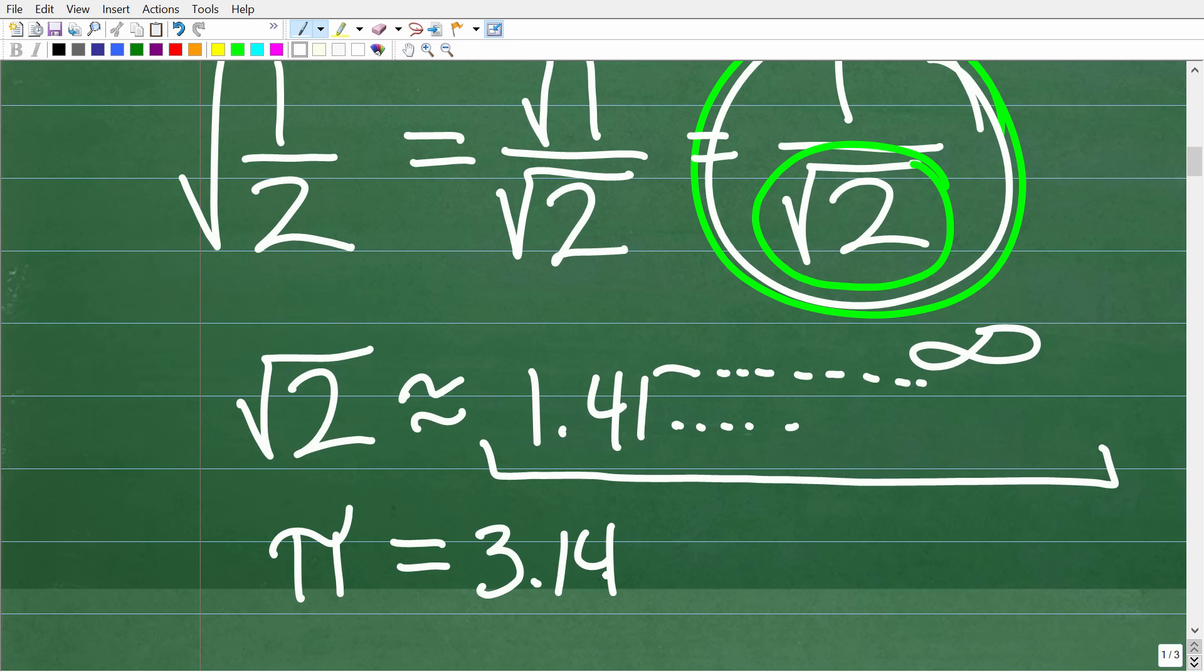You might be familiar with this concept with the value of pi. You may think that pi is equal to 3.14. Well, this is not true. The value of pi is approximately equal to 3.14 because pi is an irrational number. The definition of an irrational number in mathematics is a non-terminating and non-repeating decimal.